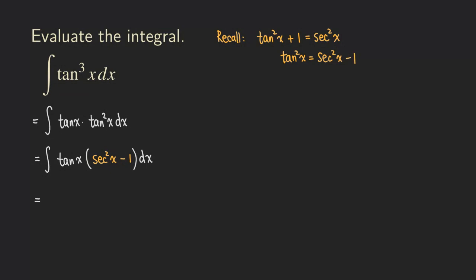We can distribute so that we don't have a product anymore, because when you have different terms added together, it's actually easier to integrate sometimes compared to a product. That's why we want to distribute the tangent, which gives us tangent x times secant squared x, and then because we're distributing tangent, we also get minus tangent x, dx.